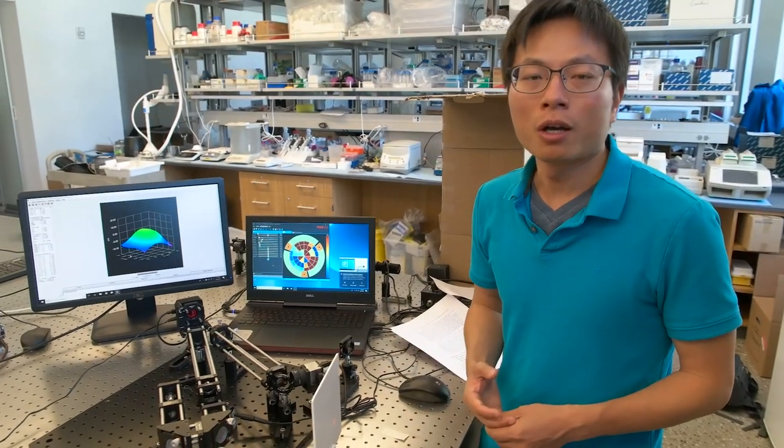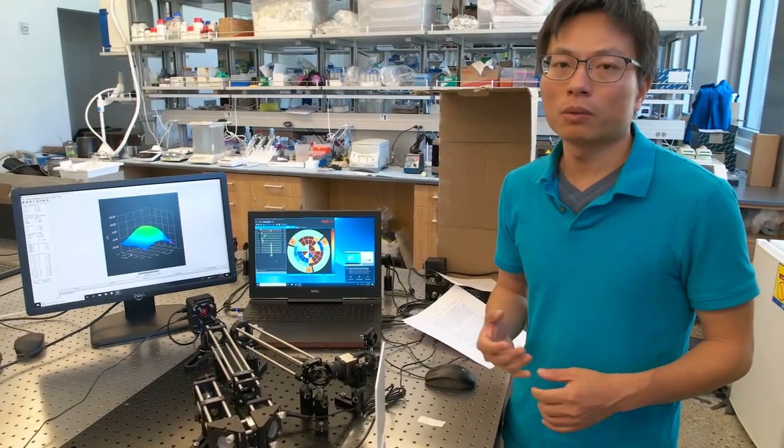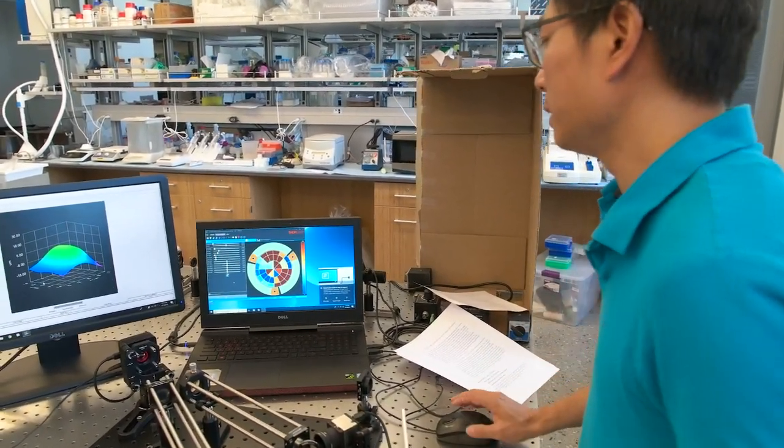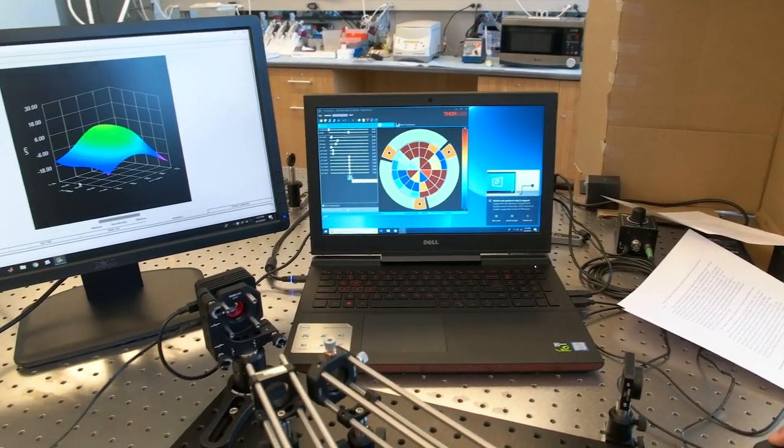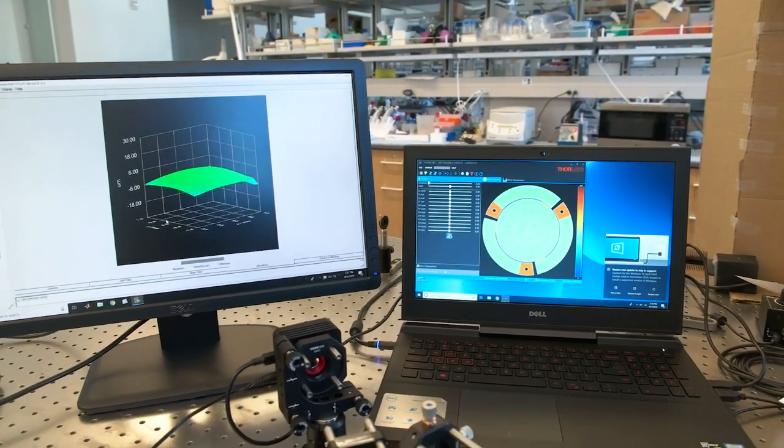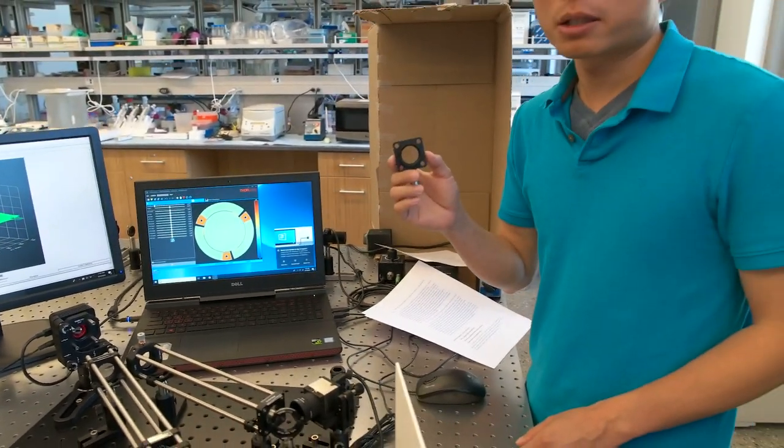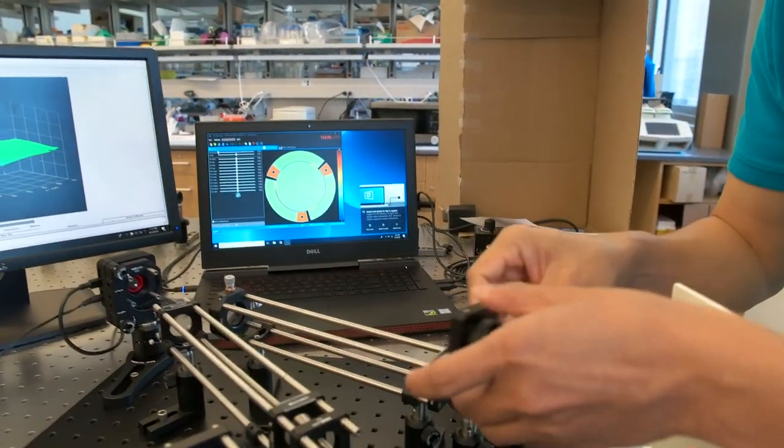Next, I'll show you how we can use the deformable mirror to compensate for wavefront distortion. First, I'm going to zero the deformable mirror so it becomes flat again. Then, I'll put a convex lens into the space here to mimic a wavefront distorter.